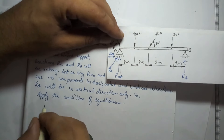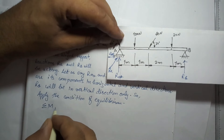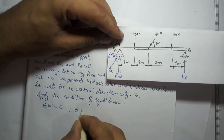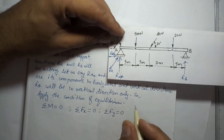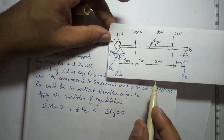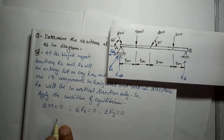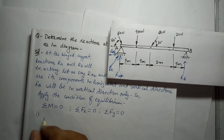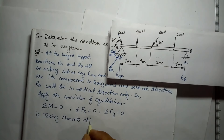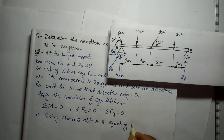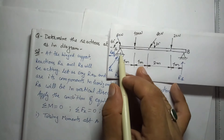The equilibrium conditions state that the sum of moments of forces is zero, the sum of horizontal forces is zero, and the sum of vertical forces is zero. This is a co-planar non-concurrent force system, which is why we also apply the moment equation. First, we will take the moment about point A and equate it to zero.